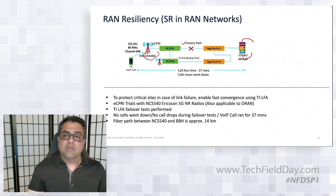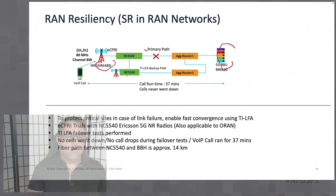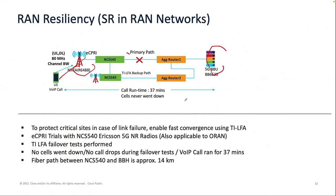I want to show you quickly: this is a test we actually did with an Ericsson 5G radio — the air 6449. This is the first time we did the test that in a RAN network, we achieved fast convergence using packet. We used TI-LFA, and what we did was have a call running voice and video, then we cut the fiber. Guess what happened? The call ran for 37 minutes — there was no call downtime, no cell went down. That is something we proved: the RAN network needs to evolve, needs to go packet. And that's where you get a lot of new technologies and innovation. Today it's just TDM.